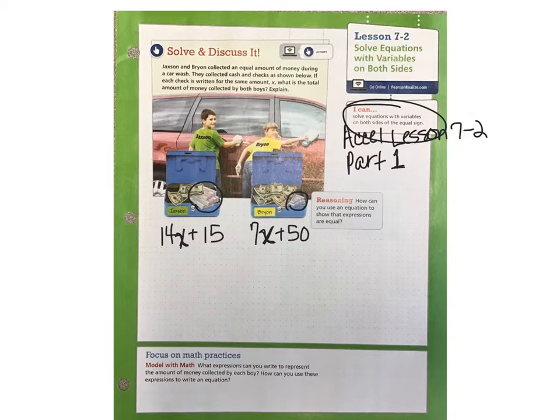What we also know is that they collected the same amount of money during the car wash. So whatever is in Jackson's cash box is equal to whatever is in Brian's cash box. Use the clues from the problem to see if you can determine what was the amount of each check, x, and how much money did each of the boys collect. Pause the video and try to problem solve using the clues, then come back and check your answer.